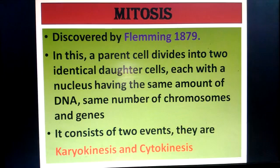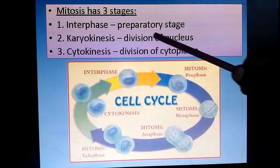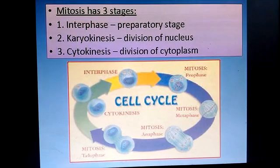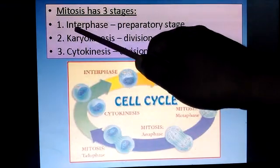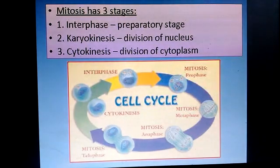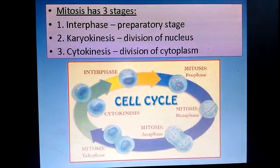Mitosis consists of two events: karyokinesis and cytokinesis. Karyokinesis is the breakdown of the nucleus; cytokinesis is the division of the cell. Mitosis takes place in three stages: first, interphase; second, karyokinesis, which is nucleus division; and third, cytokinesis, which is the division of the cytoplasm.